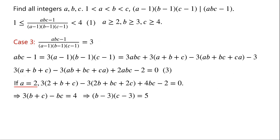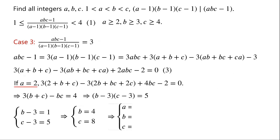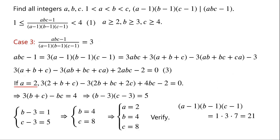As b and c are positive integers and c > b, so b - 3 = 1 and c - 3 = 5, which means b = 4 and c = 8. So a = 2, b = 4, and c = 8. Verifying: (a-1)(b-1)(c-1) = 1 × 3 × 7 = 21, and abc - 1 = 2 × 4 × 8 - 1 = 63. Since 21 is a divisor of 63, so a = 2, b = 4, and c = 8 is a solution.